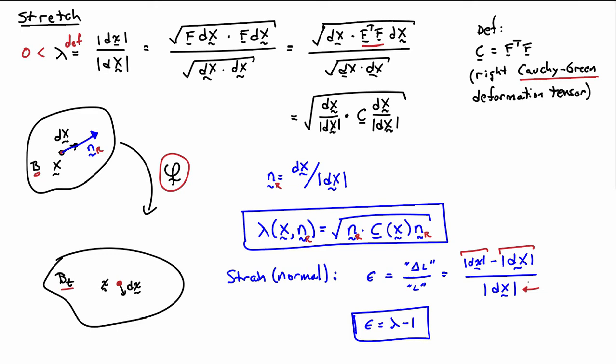So that's another relationship that one you can use. And notice that epsilon is, again, a function of X and NR. Okay, so things can be different from point to point.